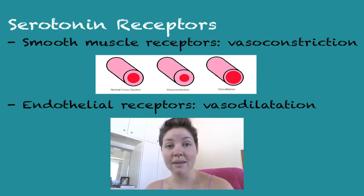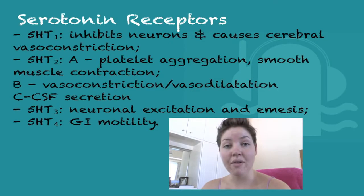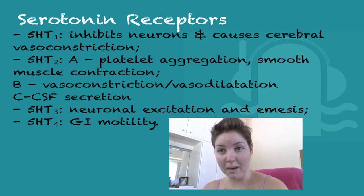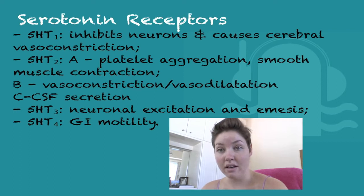Now I'm going to talk a bit about serotonin receptors. There are seven types, but 5, 6, and 7 are not characterized. Smooth muscle receptors cause vasoconstriction, and endothelial receptors cause vasodilation. This is a general rule within the receptors. We're going to call the receptors 5-HT1, 2, 3, and so on, because it's 5-hydroxytryptamine number 1, number 2, number 3.